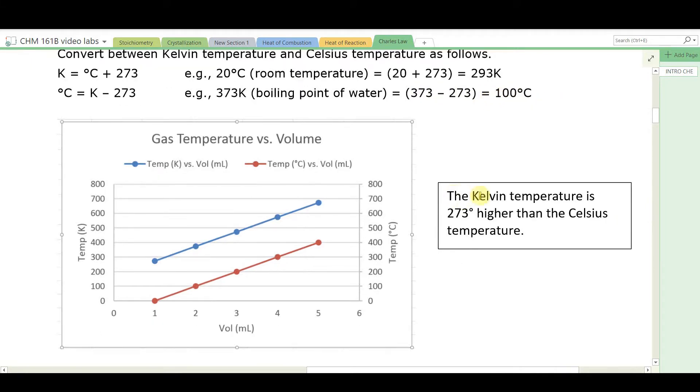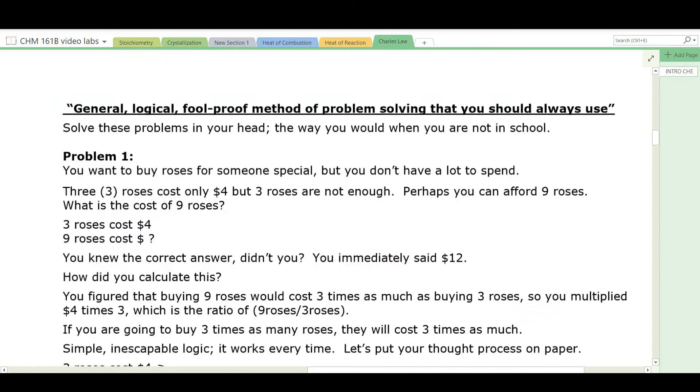So the Kelvin temperature is 273 higher than the Celsius temperature. We need to learn how to solve problems involving temperature and volume. And to do that, you should use the general, logical, foolproof method of problem solving that you should always use. Why a big title? Because you should always use it. This is the problem solving method that you would do in your head. It's the way you would solve things when you're not in school.